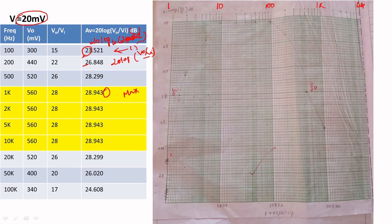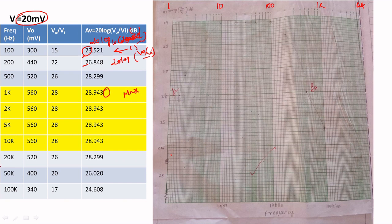On the semilog axis, the values are multiples: starting from 1, then 2 through 10; then multiples of 10 — 10, 20, 30 up to 100; then multiples of 100 — 100, 200, 300 up to 1000; then multiples of 1000 — 1000, 2000 up to 10,000. In our case, the observed range is 100 to 100 kilohertz, so I started at 100 and this is the way to plot on the semilog graph sheet.